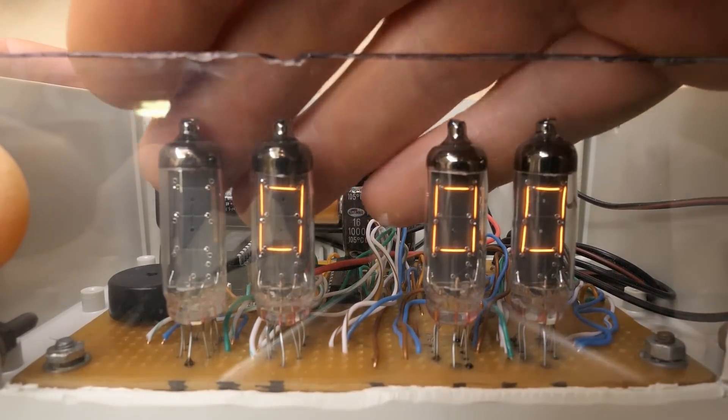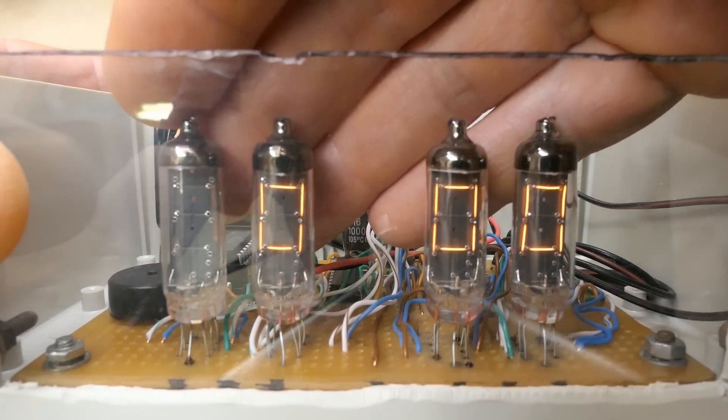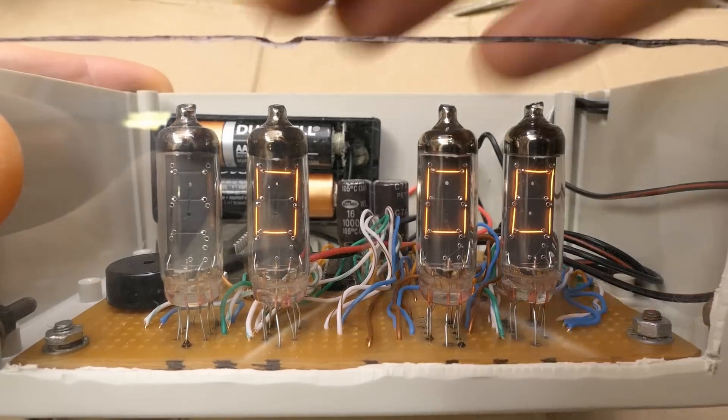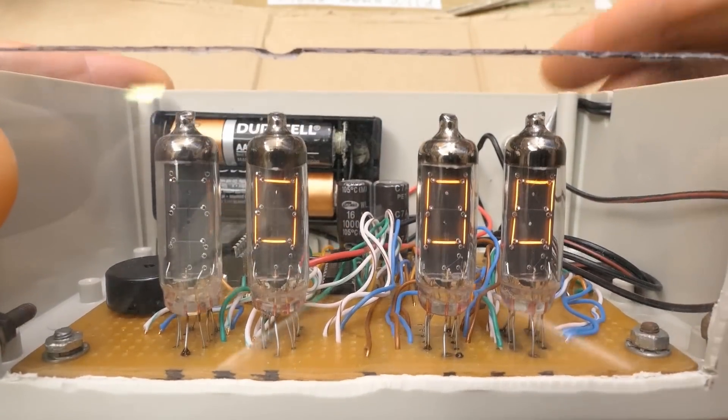Numitrons are basically seven-segment displays, but instead of LEDs, they are using tungsten filaments. It seems a bit dim under studio lights, but normally it's nicely readable.